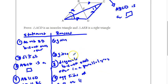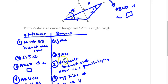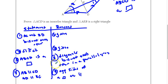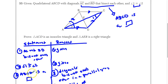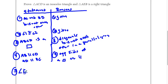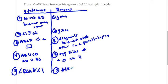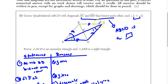Now I can use alternate interior angles. I'm going to say that angle DCA is congruent to angle 1. And that's because of alternate interior angles. So angle DCA is right here, and this is angle 1 — I'm just stating that those two are congruent.